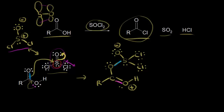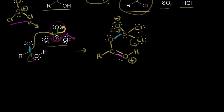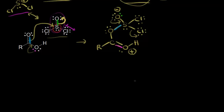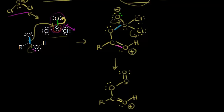We can trace the electrons: the magenta electrons form the double bond, the blue electrons form the bond between oxygen and sulfur, and the green electrons move off onto the oxygen. In the next step, these electrons move in to form the double bond between oxygen and sulfur, which kicks off the chloride anion as a leaving group. Chloride is an excellent leaving group because it's stable on its own. We now have only one chlorine bonded to sulfur — we've lost the chloride anion.